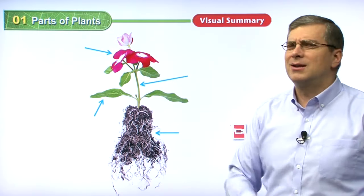Another thing we use leaves for — did you know this? This is very interesting: leaves are used to make toothpaste. So when you're brushing your teeth tonight or after your next meal, when you use your toothpaste, think about that. Part of the toothpaste — not the whole toothpaste, but part of it — was made from plants' leaves. Wow, that's very interesting, isn't it?